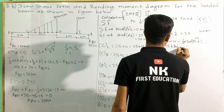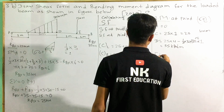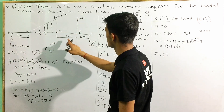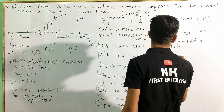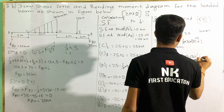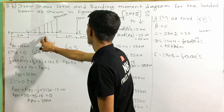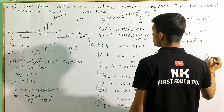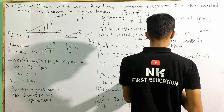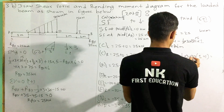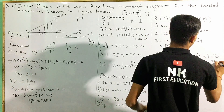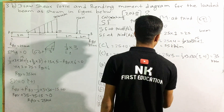The unit is kilonewton meter. We can add point E. We can add 25. Now: 25 times 5 minus 15 times some distance, minus 35 kilonewton, minus 25 times 6.